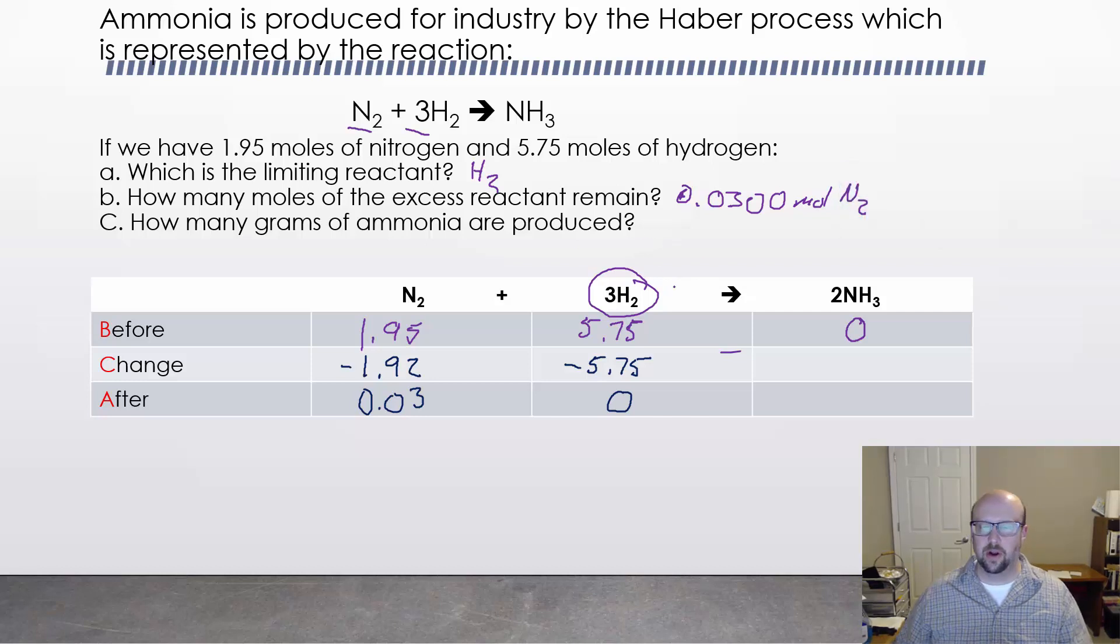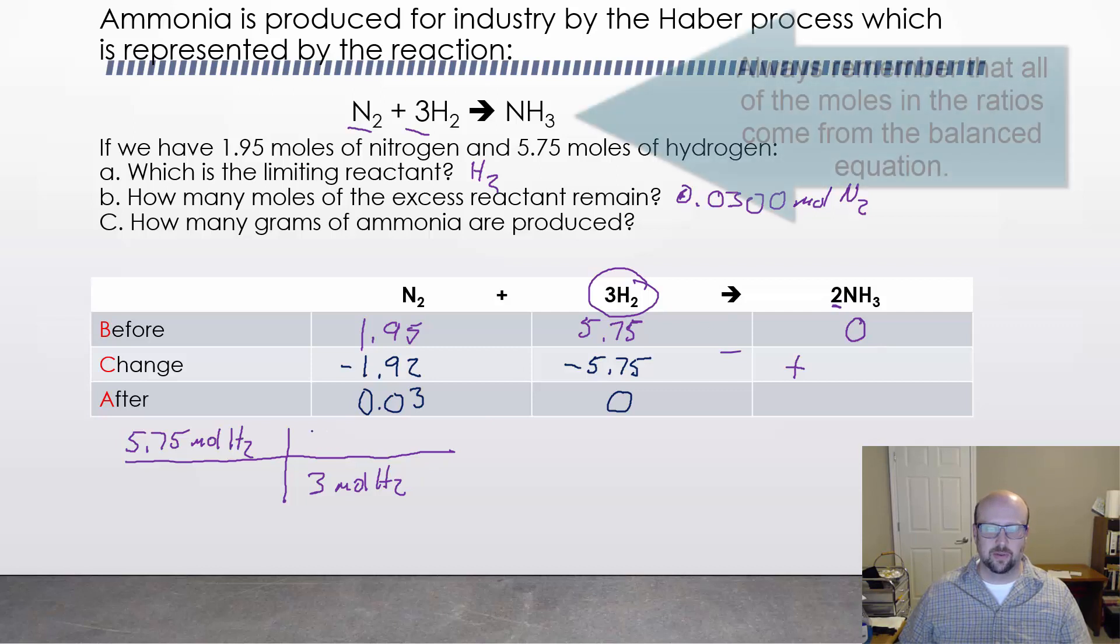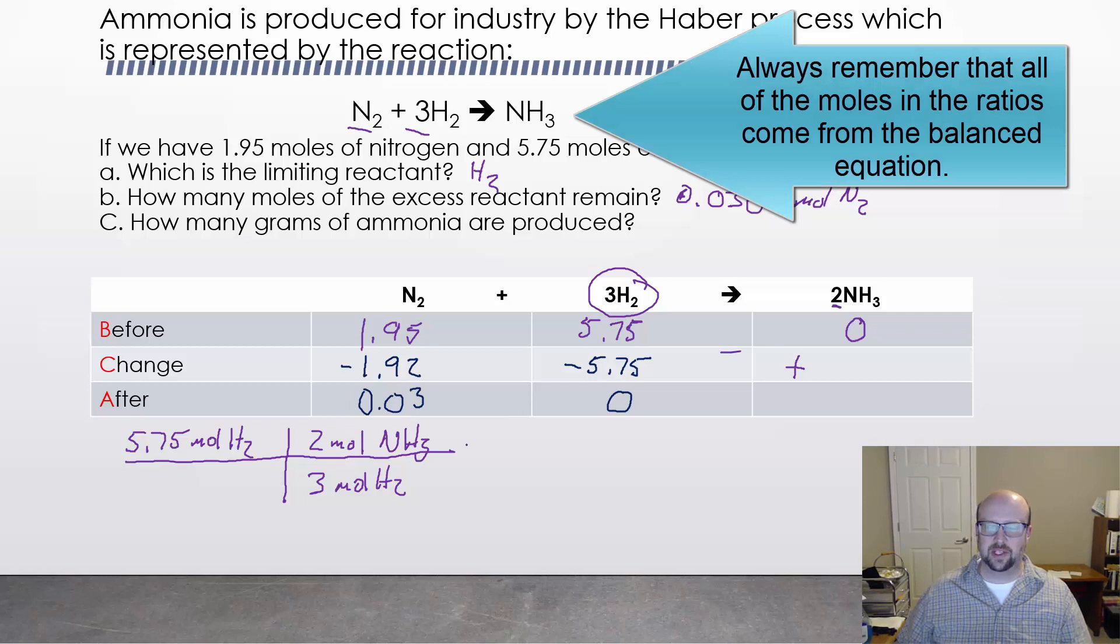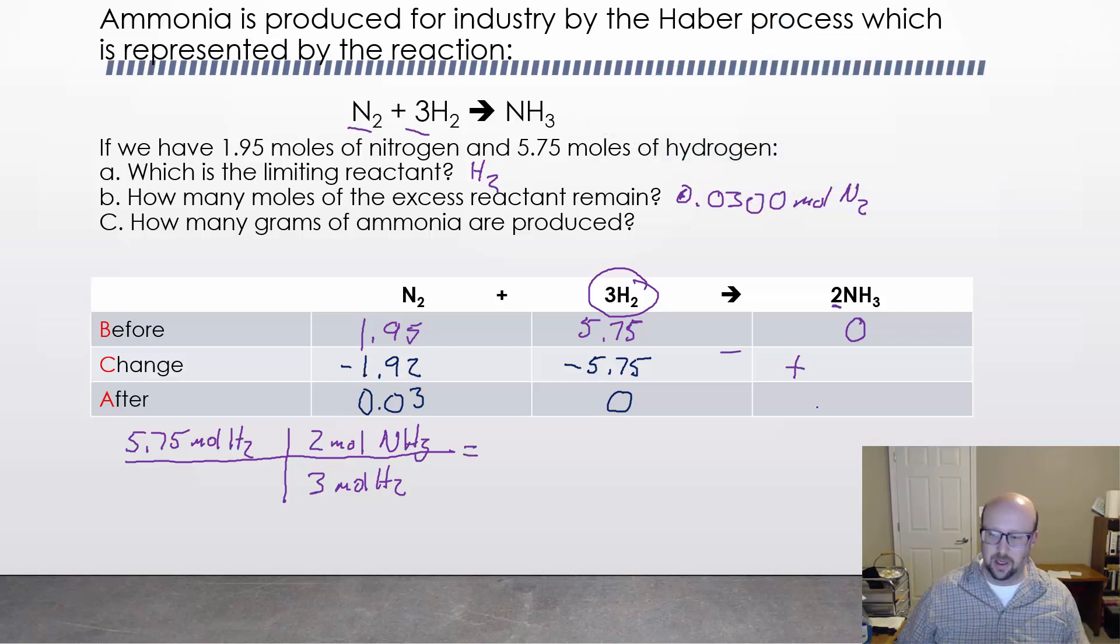And then the last question asks how many grams of ammonia are produced. Well, we already are sort of set up for that. We already know that we've lost these things and that we could figure out how much of this do we add. So we lost the reactants. They're getting consumed in the process of the reaction happening and we're going to gain product. So the question is how much product do we gain? Well again, that's a real simple mole ratio calculation. I'm going to go back and use my initial 5.75 moles of hydrogen because that's the limiting reactant and anytime you're doing stoichiometry you should be trying to use the limiting reactant. So 3 moles of hydrogen and then 2 moles of ammonia on the top. We're going to do that little bit of math there and that's going to tell us how many moles of ammonia get produced, which happens to be 3.83 moles of ammonia.